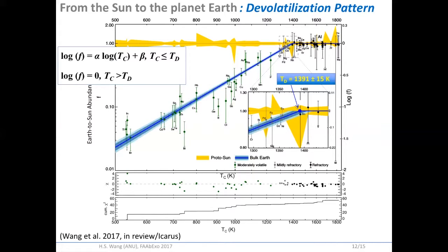We fit a joint model to these trends to get our devolatilization pattern. We also determined the devolatilization temperature, which we interpret as the highest temperature that materials experienced during the formation of the Earth. The lower two panels show the goodness-of-fit as a cumulative assessment of this model.